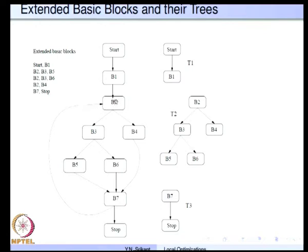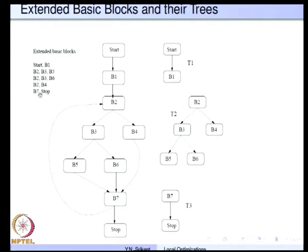Taking the other path, we have b2 then b3 then b6, which has a unique predecessor b3, but we cannot go to b7 for the same reason. So b2, b3, and b6 form a separate extended basic block. Finally, b7 and stop will form the last extended basic block. So we have 5 such extended basic blocks, out of which start–b1 and b7–stop do not share blocks with any others; these 2 are separated as 2 different extended basic blocks.